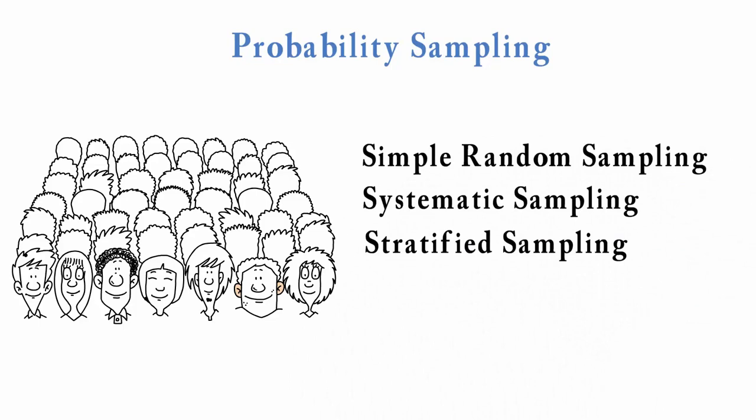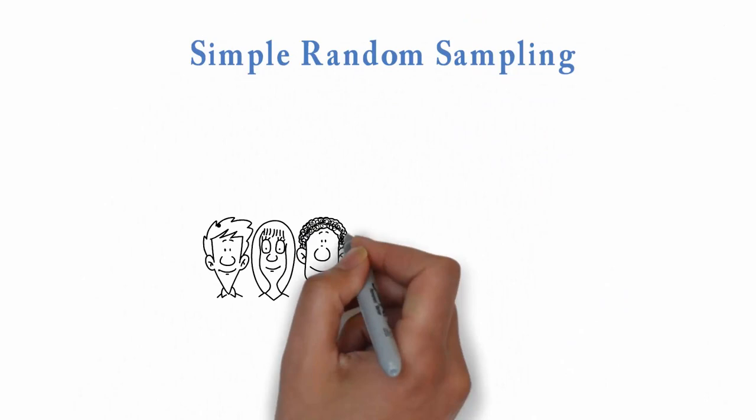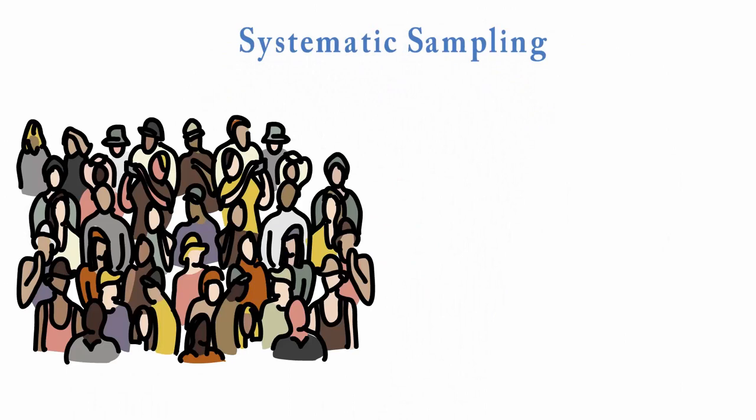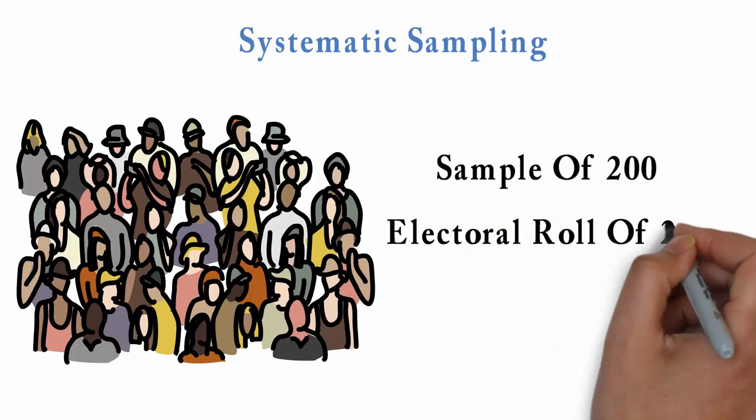For simple random sampling, each member of the population has an equal chance of appearing in the sample, usually selected using a random number table. For systematic sampling, a random criteria is used. For example, to select a sample of 200 from an electoral roll of 2000, we pick every tenth person.